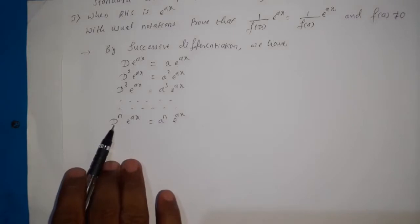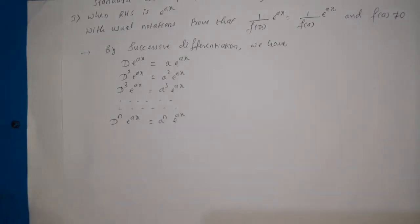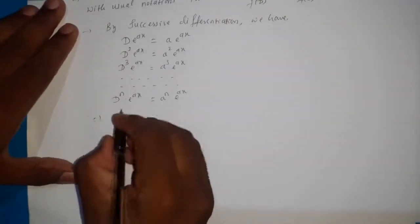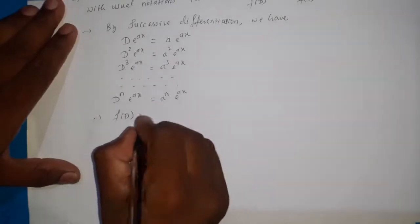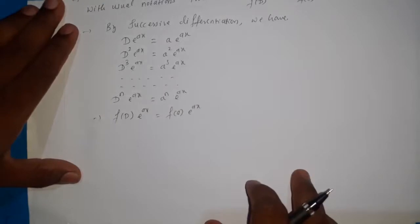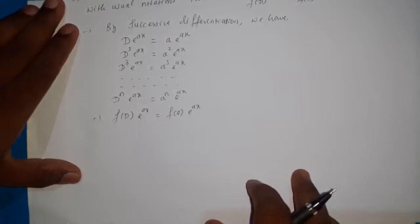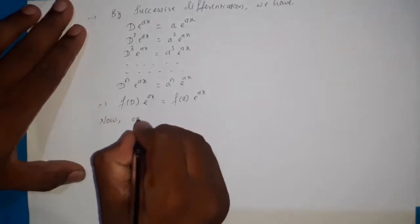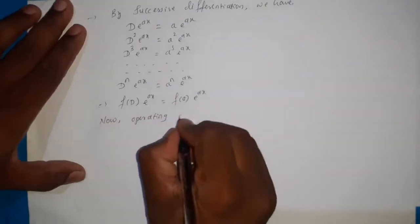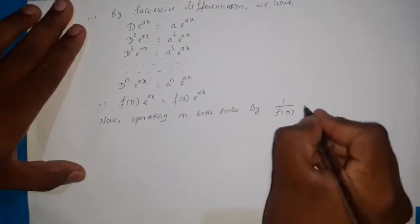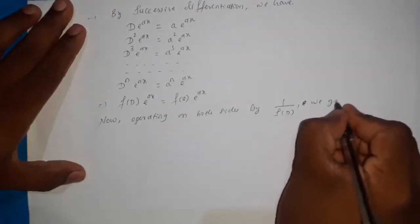Here D^n equals the nth derivative d^n/dx^n. This implies we can replace D^n with f(D), because it is a function of D applied to e^(ax), and a^n with f(a) · e^(ax). Now, operating on both sides by 1/f(D).